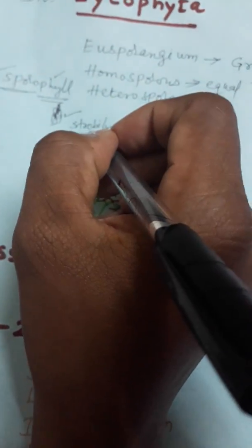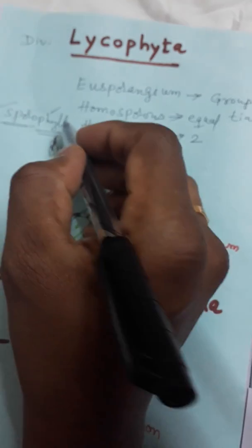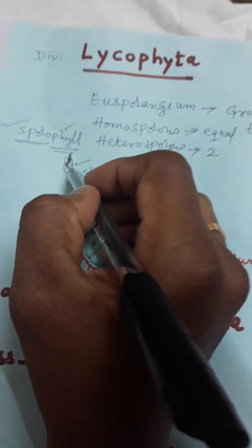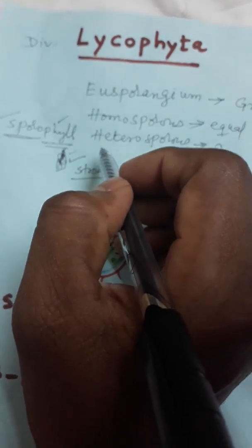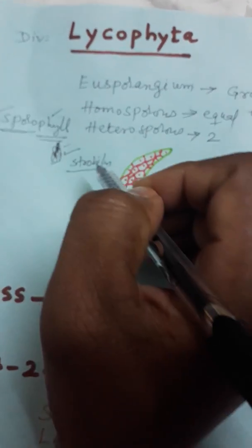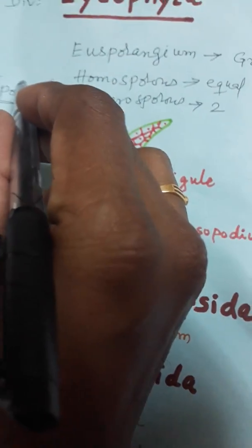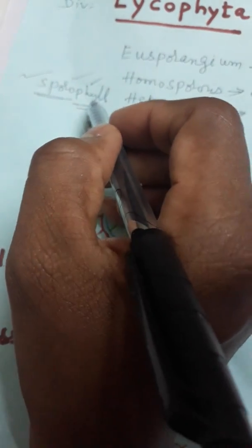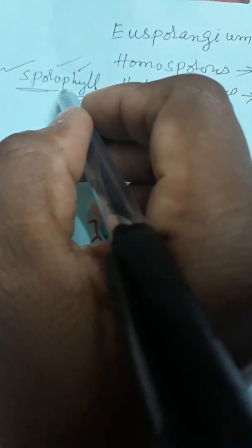How is strobilus formed? The aggregation of many sporophylls forms a cone-like structure. That cone is called strobilus. To define sporophyll again: sporangium-containing leaves are called sporophylls.